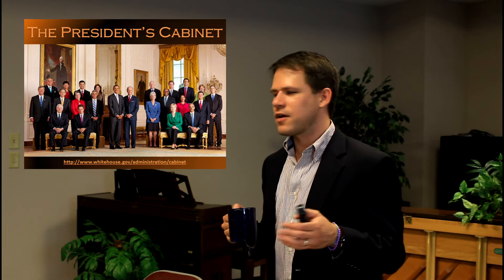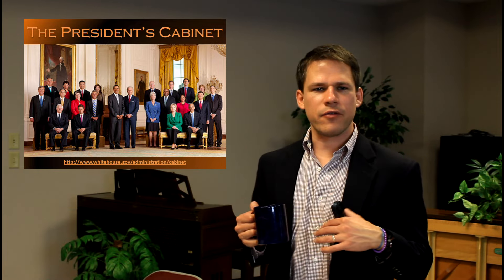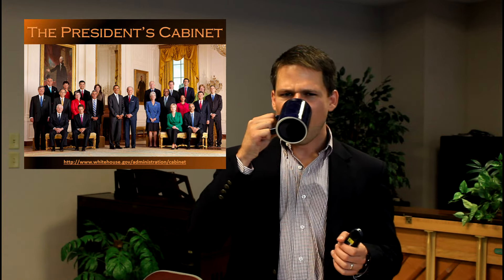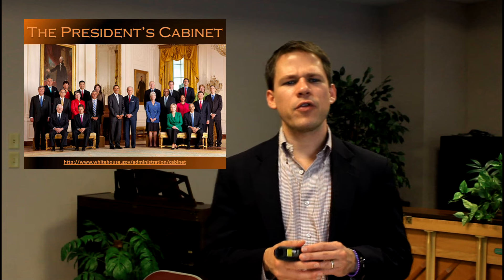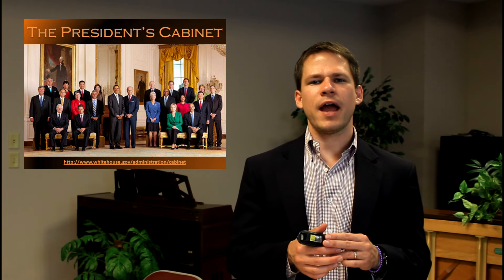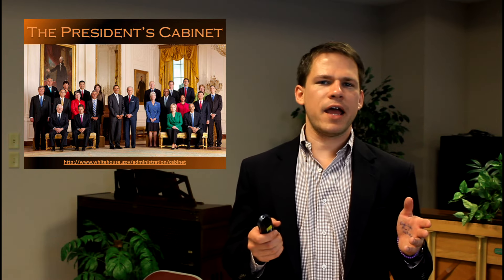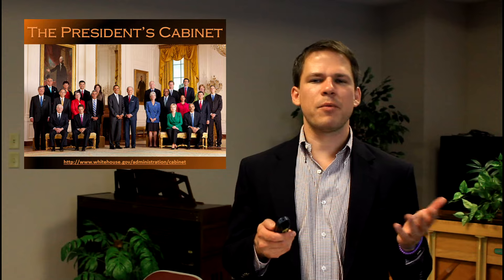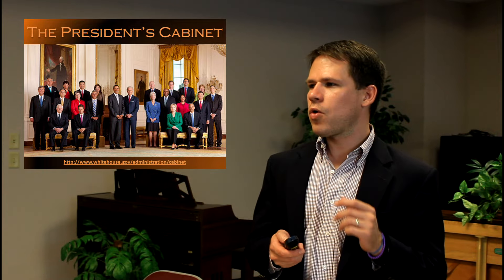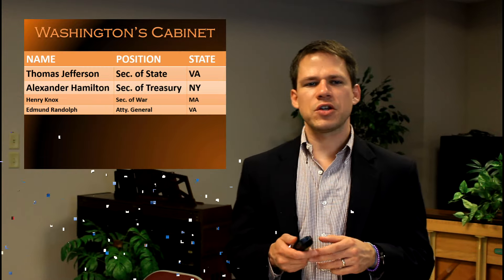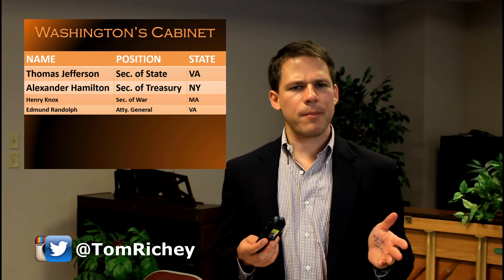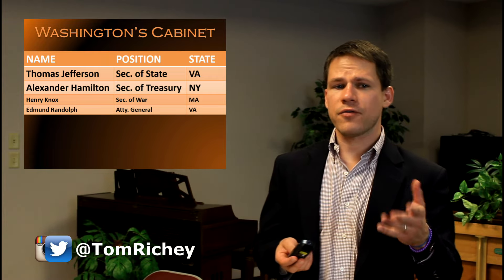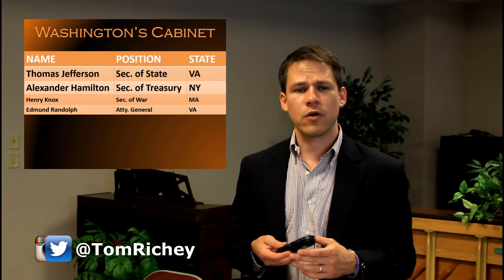The cabinet is a group of advisors that Washington, or any president, would have. Washington's first cabinet only included four positions: Secretary of State, Secretary of Treasury, Secretary of War, and Attorney General. That's why in a picture of Obama's cabinet, four people get to sit down — they occupy the four most ancient positions.